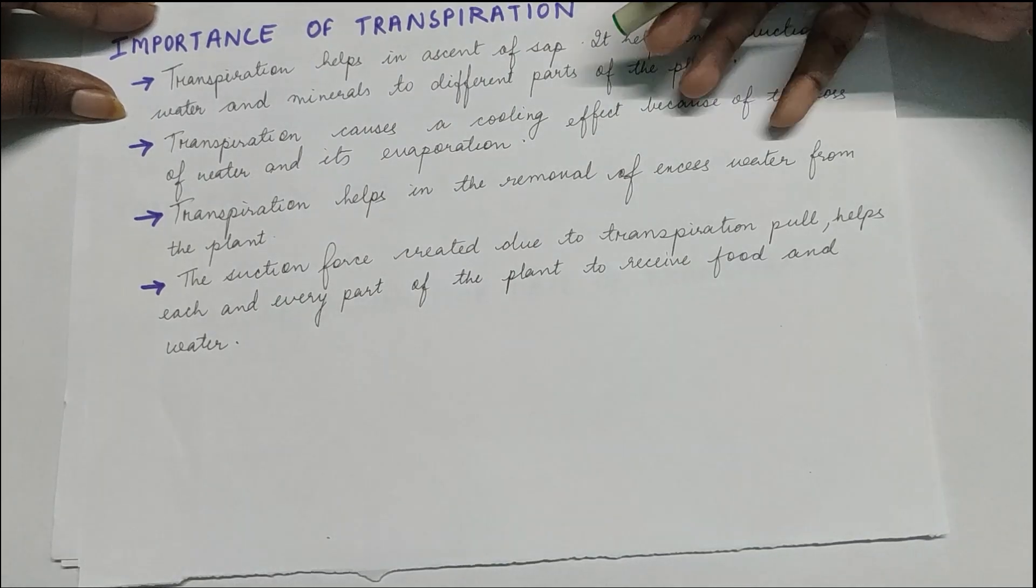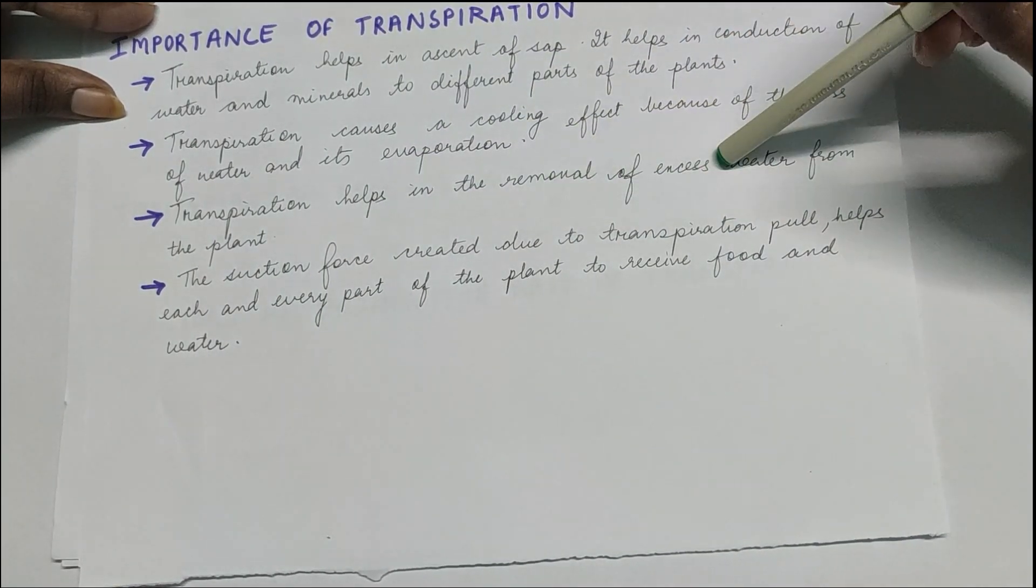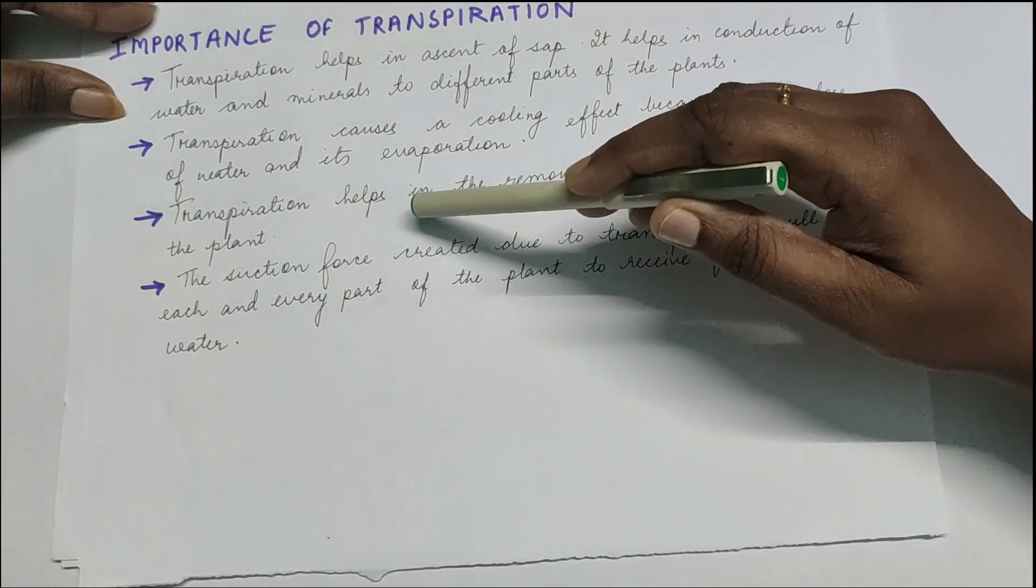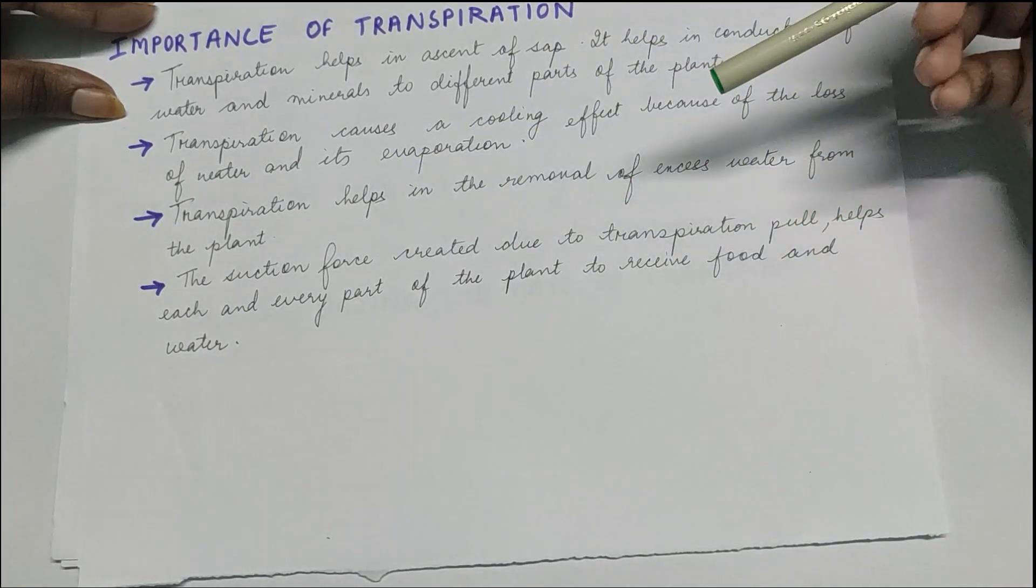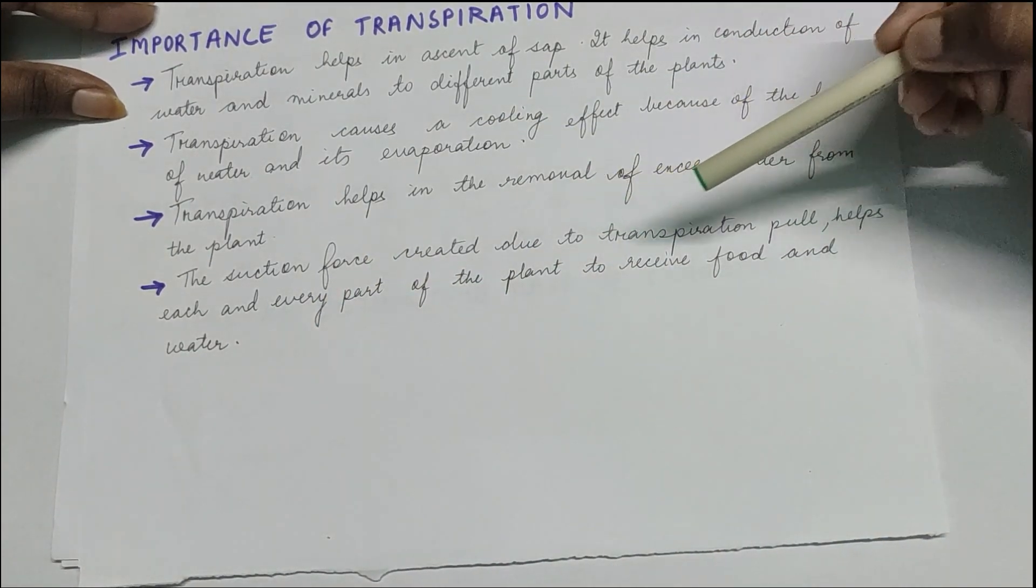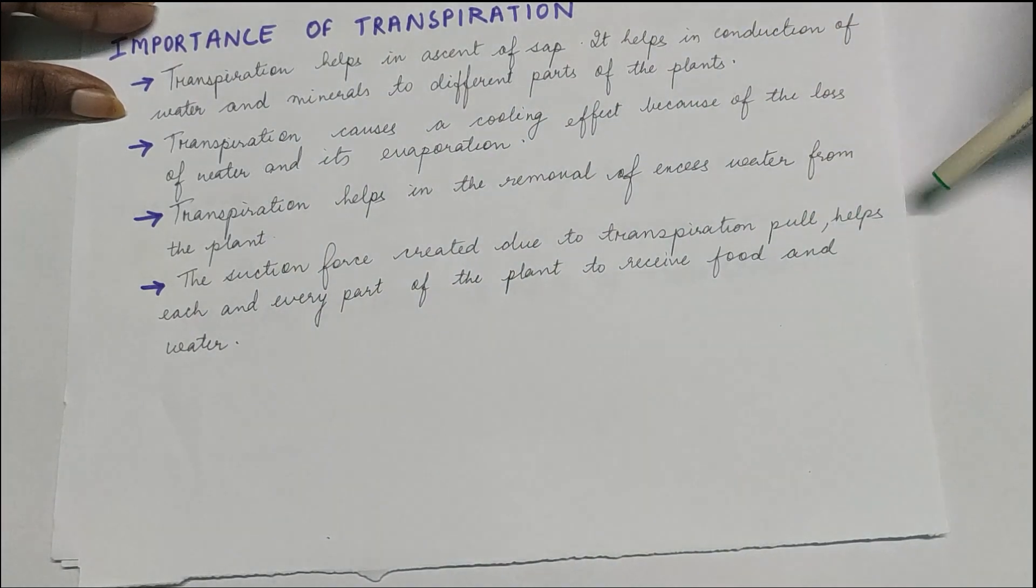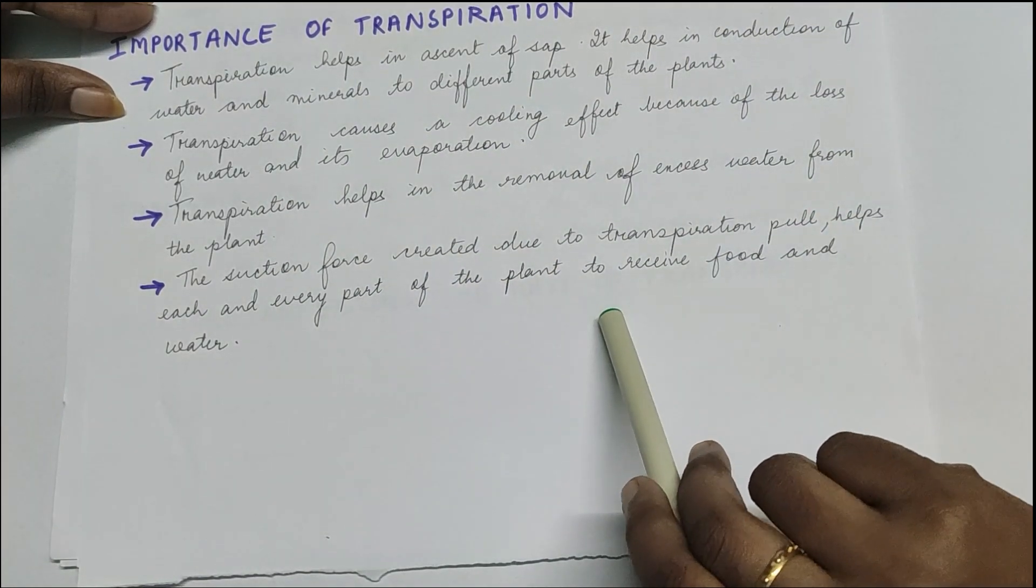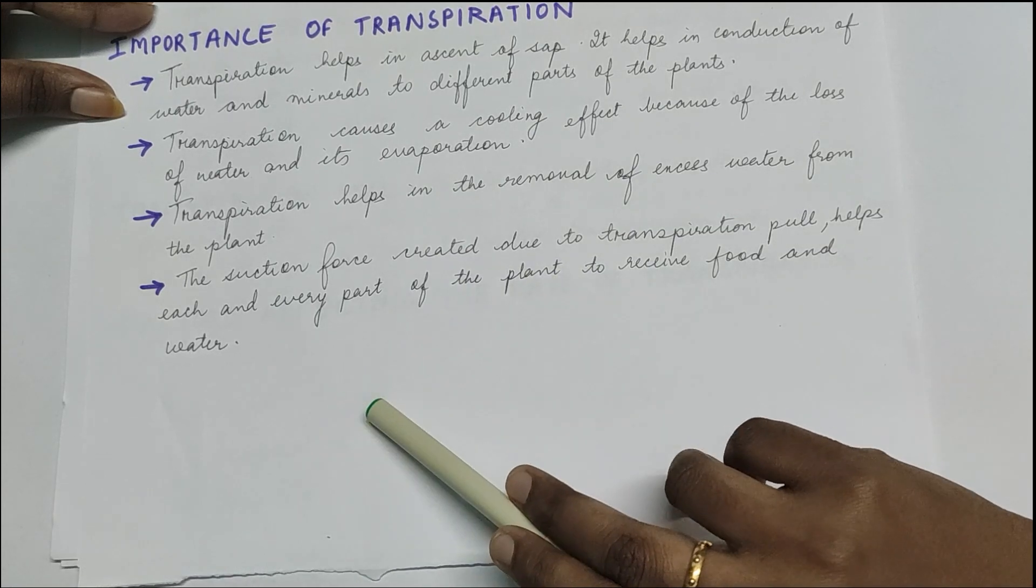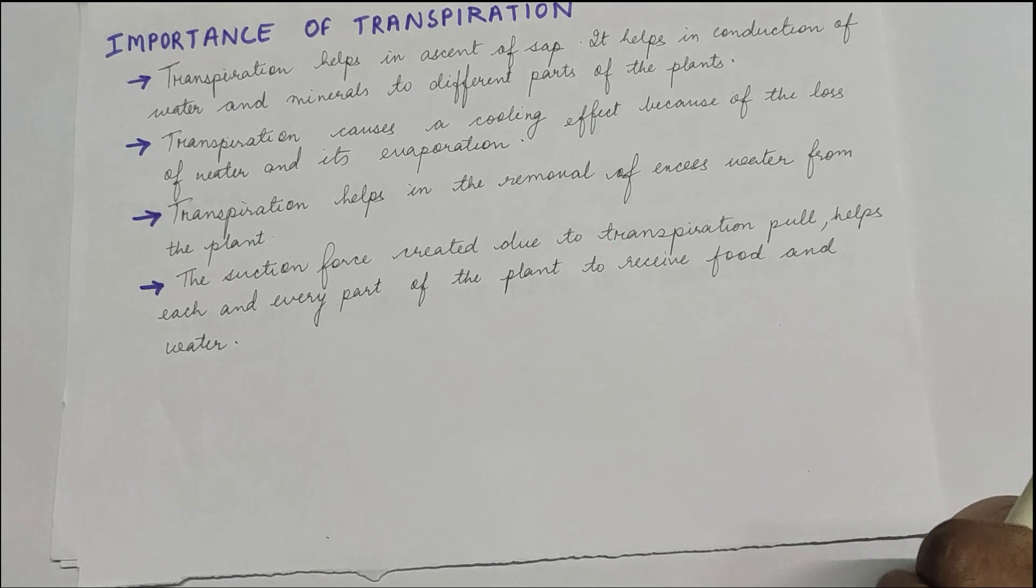Then transpiration helps in the removal of excess water from the plant as we discussed in the definition itself. And the suction pressure which is created because of transpiration, that we call transpiration pull, helps each and every part of the plant to receive the food and water. So with this we come to the end of today's session. Thank you for watching.